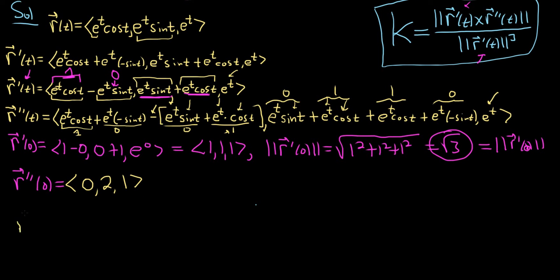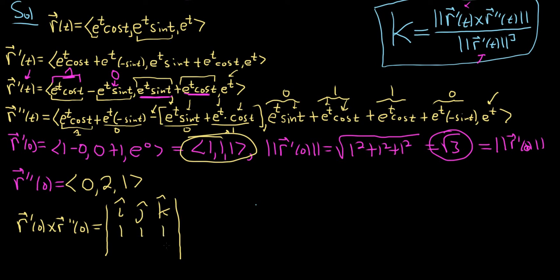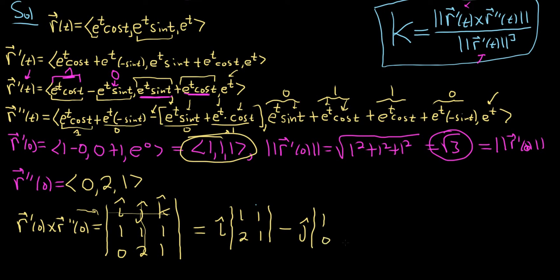Now we find the cross product r prime of 0 cross r double prime of 0. We write i, j, k in the first row; 1, 1, 1 in the second row; and 0, 2, 1 in the third row. The pattern is plus minus plus, so we get: plus i hat with submatrix 1,1,2,1; minus j hat with submatrix 1,0,1,1; plus k hat with submatrix 1,1,0,2.